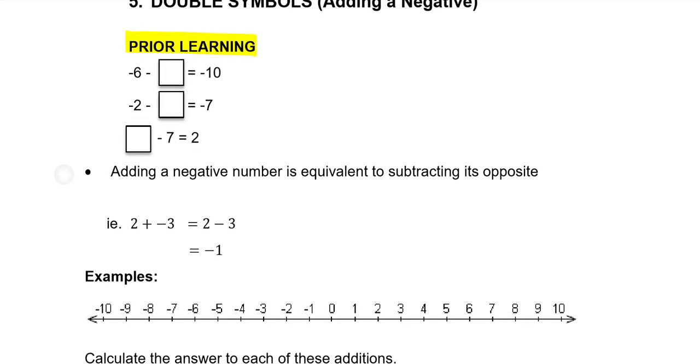So the first question starts at minus 6 and I have to take away something which means move to the left to get to minus 10. So if we use a little number line down below here we're starting at minus 6 and I need to go 1, 2, 3, 4 jumps to get over here to the minus 10. So the number I need is a 4.